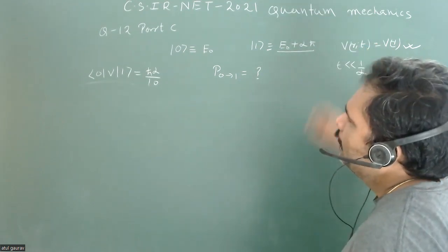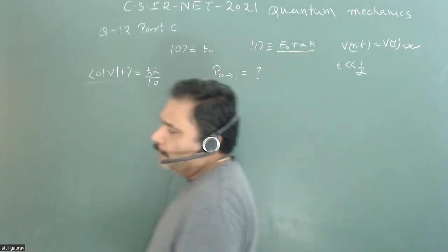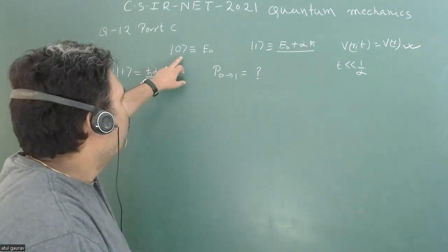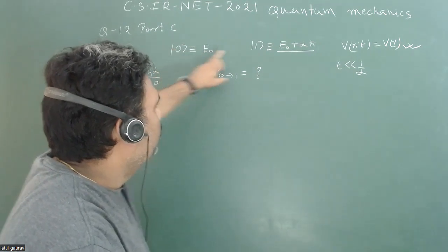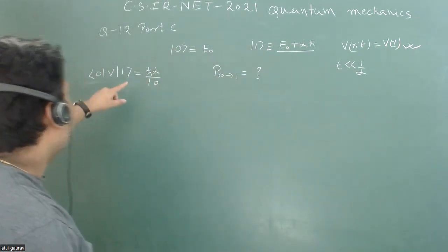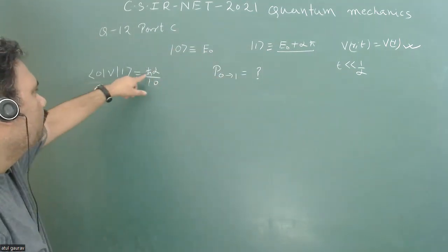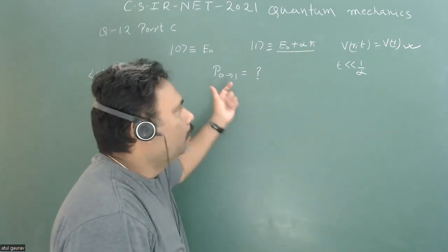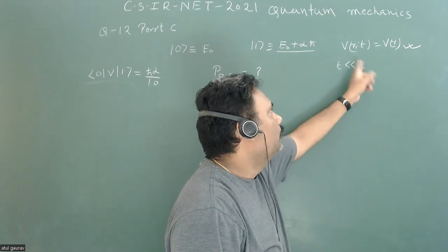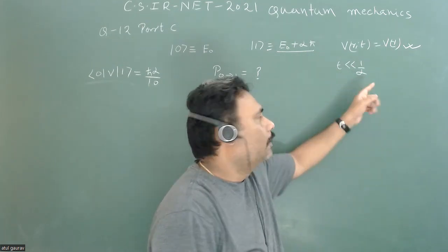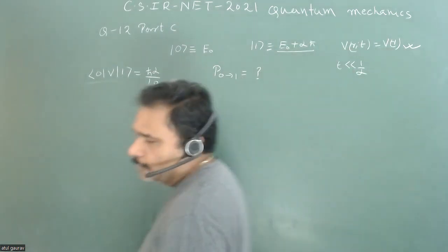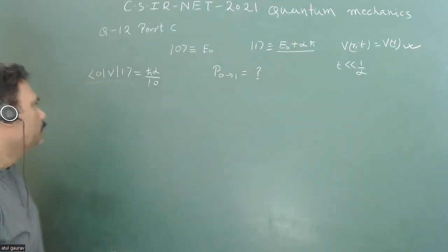What we have to do is calculate the transition probability such that the particle will take transition from zero state to one state. It is given that the transition matrix element is ℏα/10, and we have to calculate this for very small time, meaning t << 1/α.